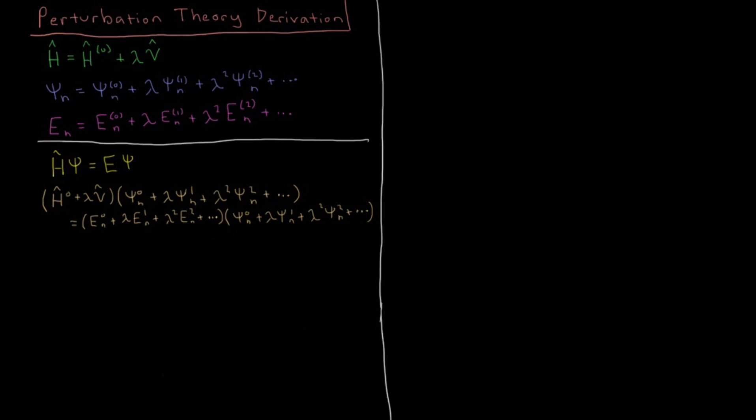So in perturbation theory we have some system for which we cannot solve the Schrodinger equation exactly, and its Hamiltonian is defined as H here. We express this Hamiltonian in terms of the reference Hamiltonian for a system which we can solve the Schrodinger equation exactly, plus a perturbation operator which is everything else left in the Hamiltonian of the part we can't solve exactly.